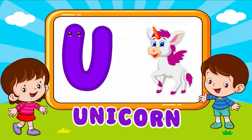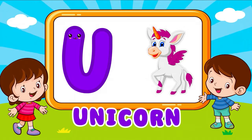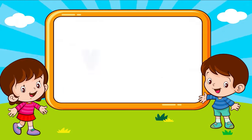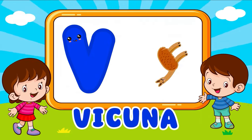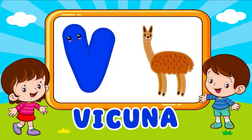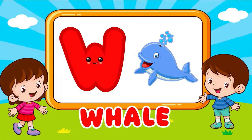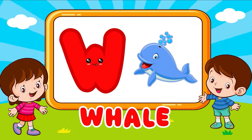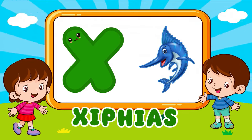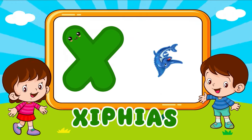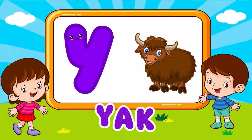U is for unicorn. U, unicorn, U is for unicorn. U, U. V is for vicuña. V, vicuña, V is for vicuña. V, V, V. W is for whale. W, whale, W is for whale. W, W. X is for cepheus. X, X, X, X, X is for cepheus. X, X, X, X.